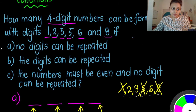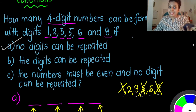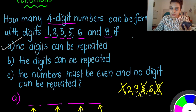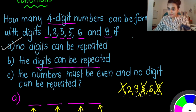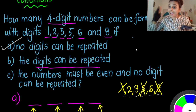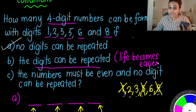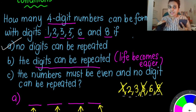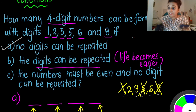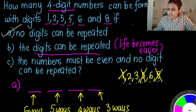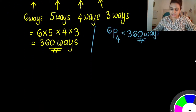Now let's look at question B: the digits can be repeated. Your keyword here is the digits can be repeated. Remember, whenever they say that you can repeat, your life becomes easier. Because when you see something can be repeated, you can repeat the numbers. So for example here, if teacher wants to write the number 8 four times — 8, 8, 8, 8 — that's fine. It's easy, right? Because you can repeat.